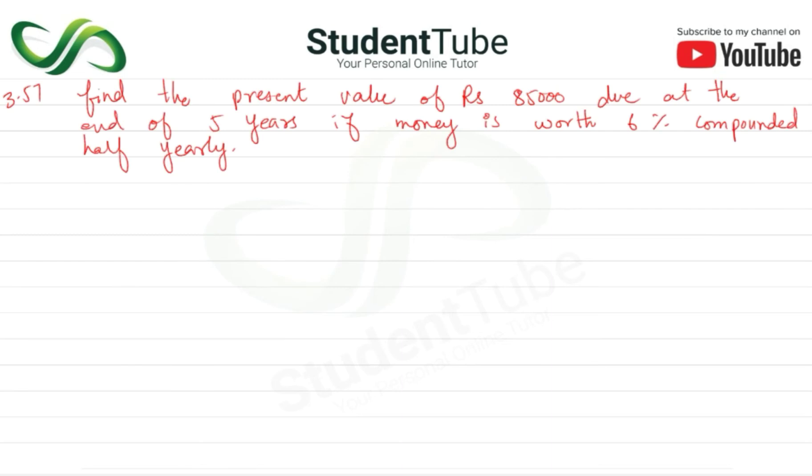present value of rupees 85,000 due at the end of 5 years if money is worth 6 percent compounded half yearly. So PV is equal to FV × (1/(1+r))^n. So n